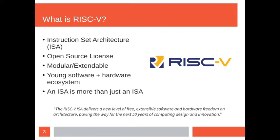The instruction set architecture itself is designed to be modular or extendable, so if you are implementing a RISC-V core you can include or exclude portions of the ISA that are interesting to you. For example, why implement a hardware floating point unit if you know you're just building an embedded chip that will never need it?